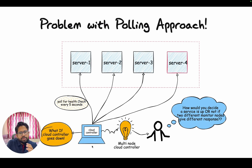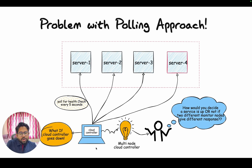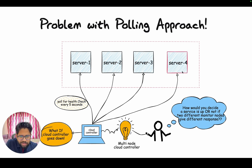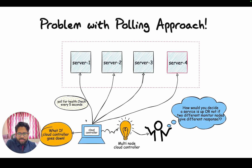Let's talk about what's the problem with the polling-based approach. There are multiple servers — one server I have marked in red, which is the one that is not healthy. The cloud controller is polling every 5 seconds: it polls all of these servers and whichever server is unable to respond, it marks as unhealthy and takes some action. But there are a few problems with that approach. The first is: what if this controller or the monitor goes down?